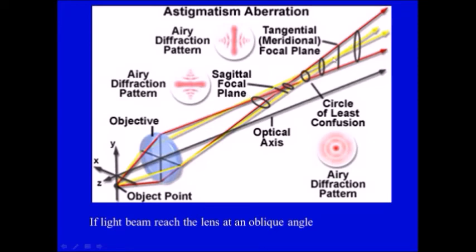And if you go posterior the other rays are in focus while the first rays are out of focus. So each point of the image will be like this. And in between we have the circle of least diffusion.